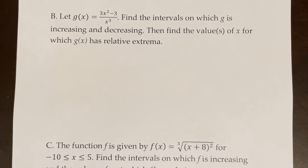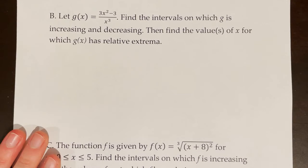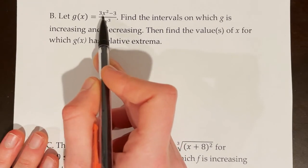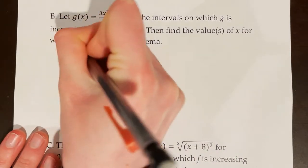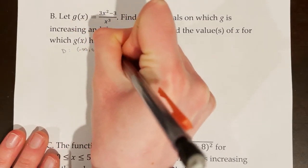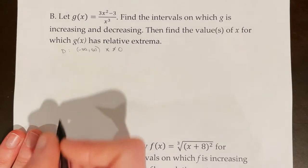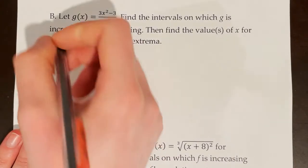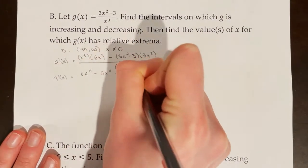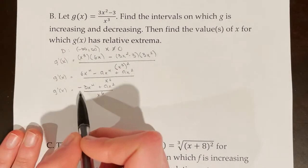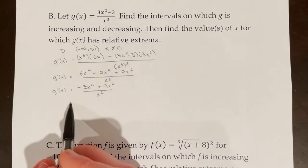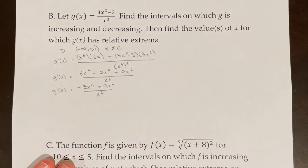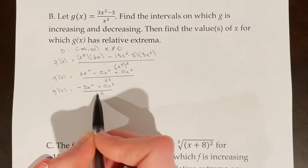Let g of x equal 3x squared minus 3 over x cubed. Find the intervals on which g is increasing and decreasing, then find the values of x for which g of x has relative extrema. The first step is to determine the domain. I can plug in any x coordinate except x equals 0, because that would give something over 0. So my domain is all real numbers except x cannot equal 0. Next, I'll take the derivative of g of x using the quotient rule: g prime of x equals negative 3x to the fourth plus 9x squared all over x to the sixth.